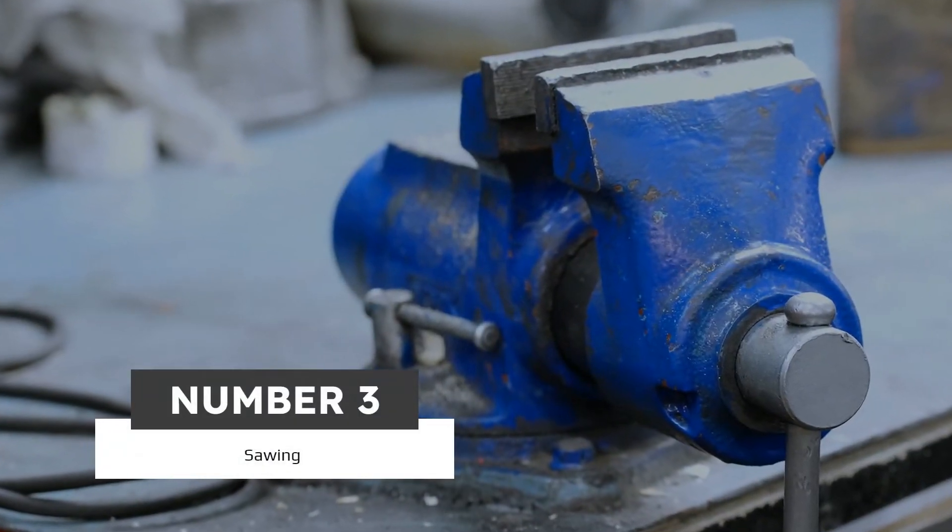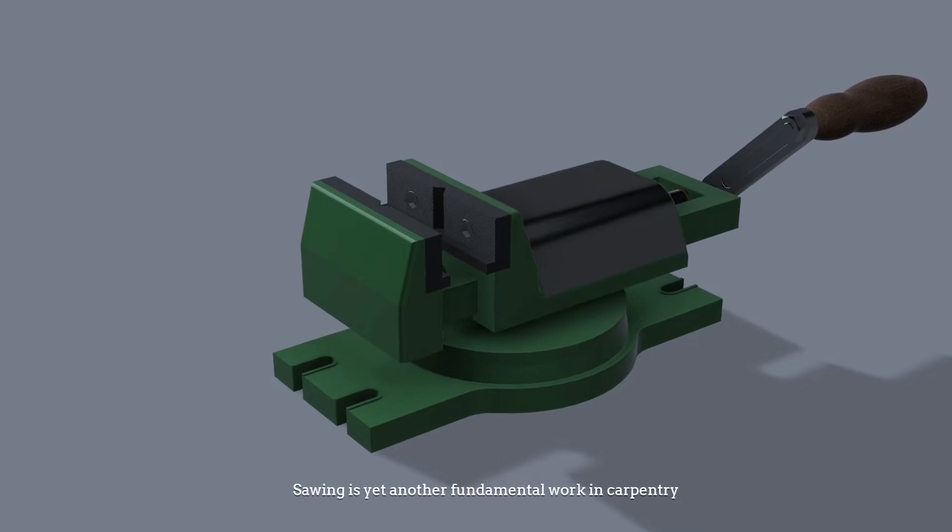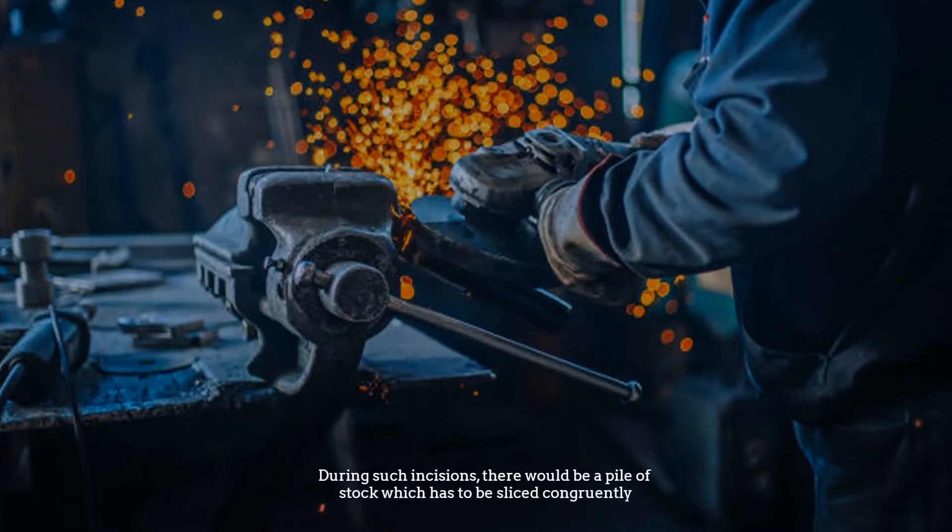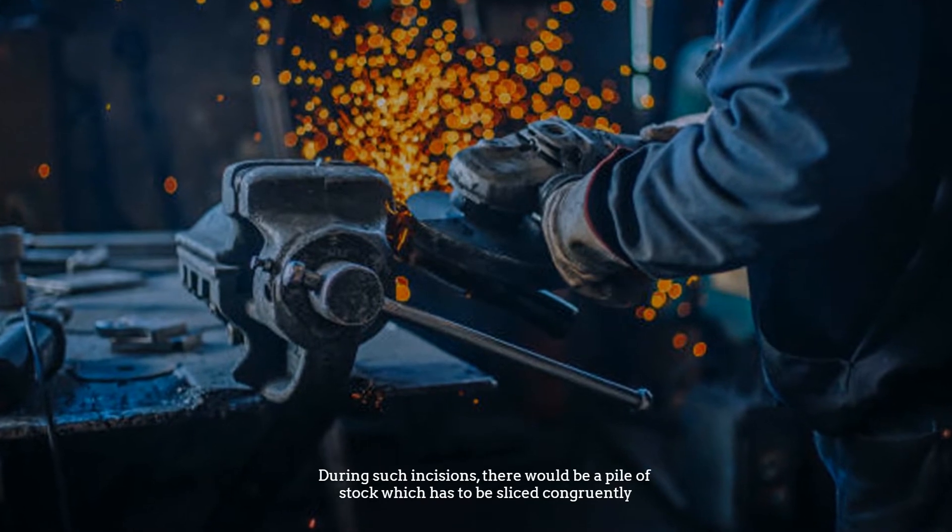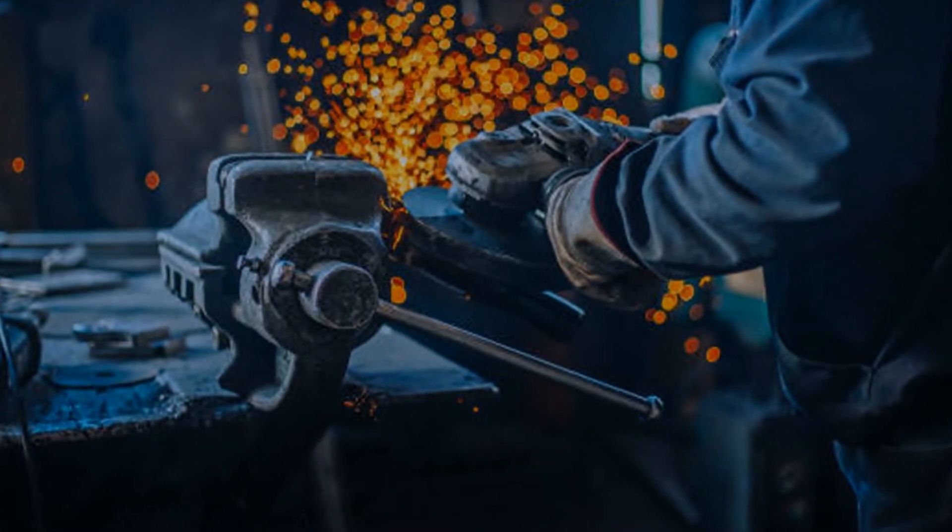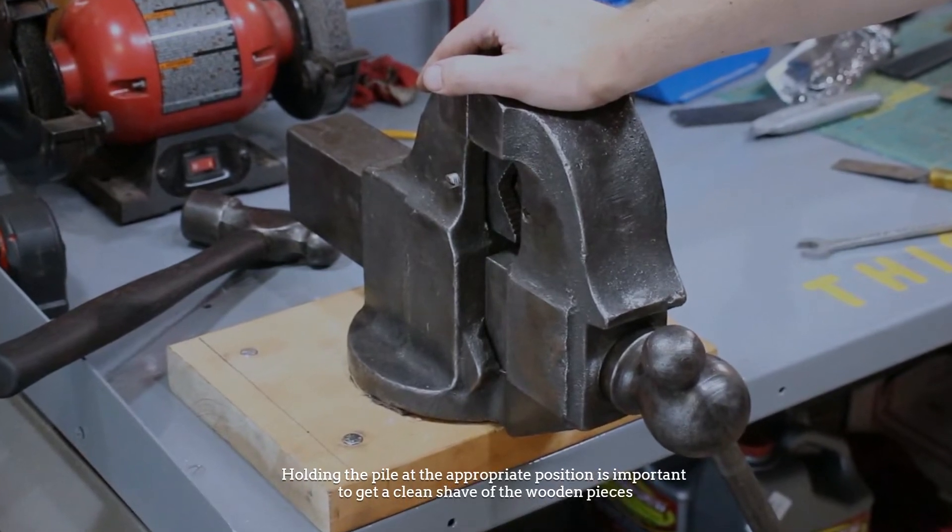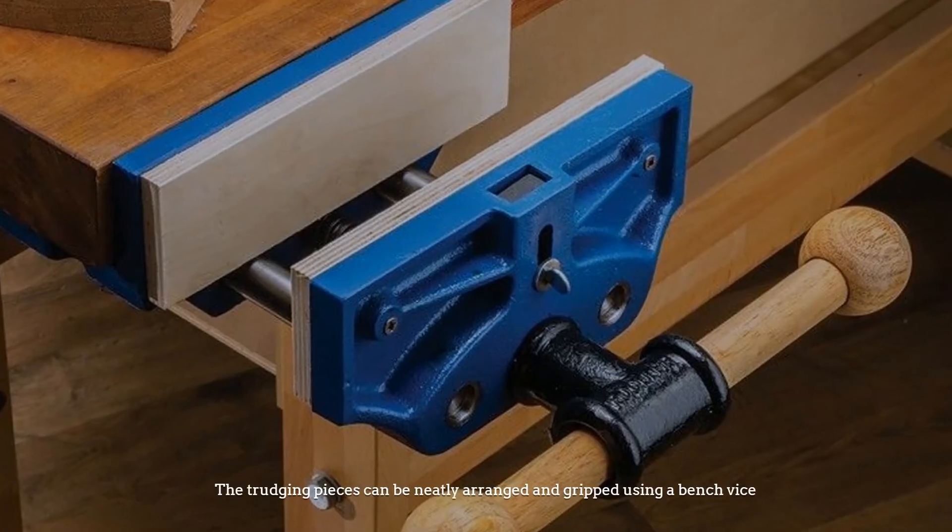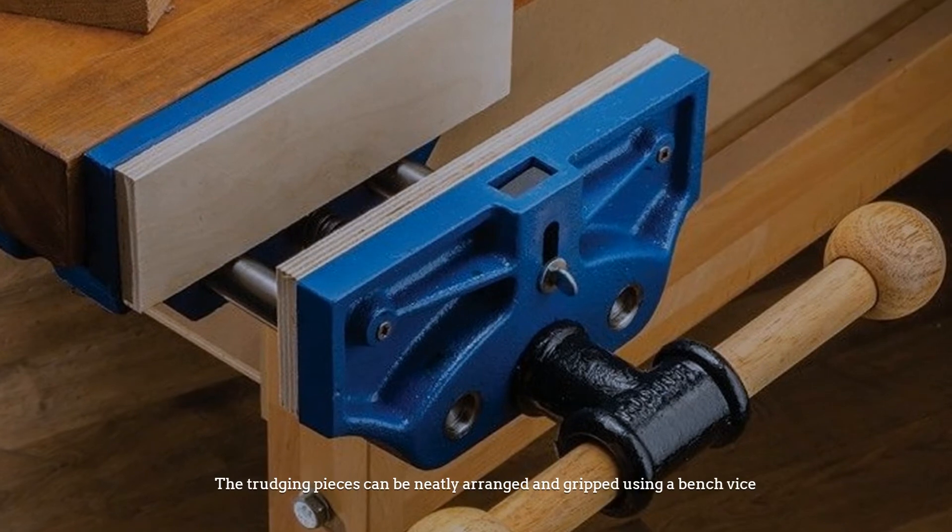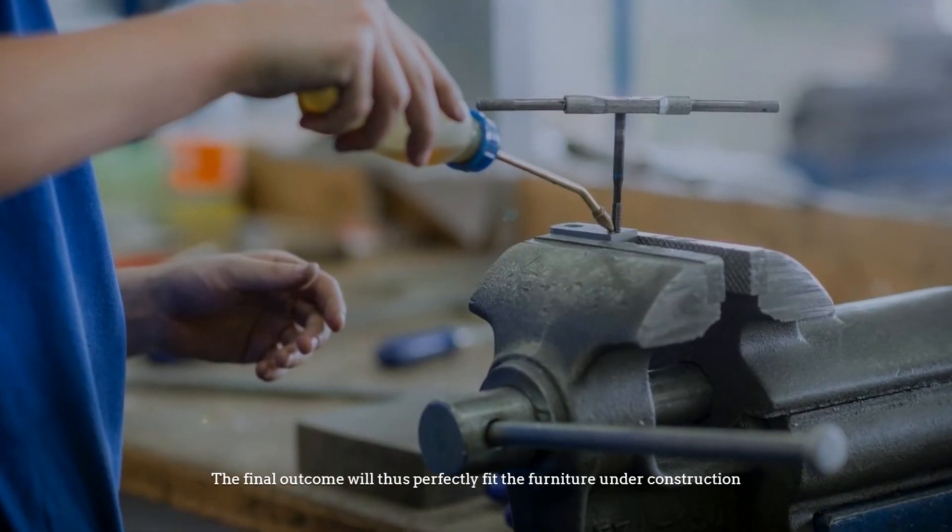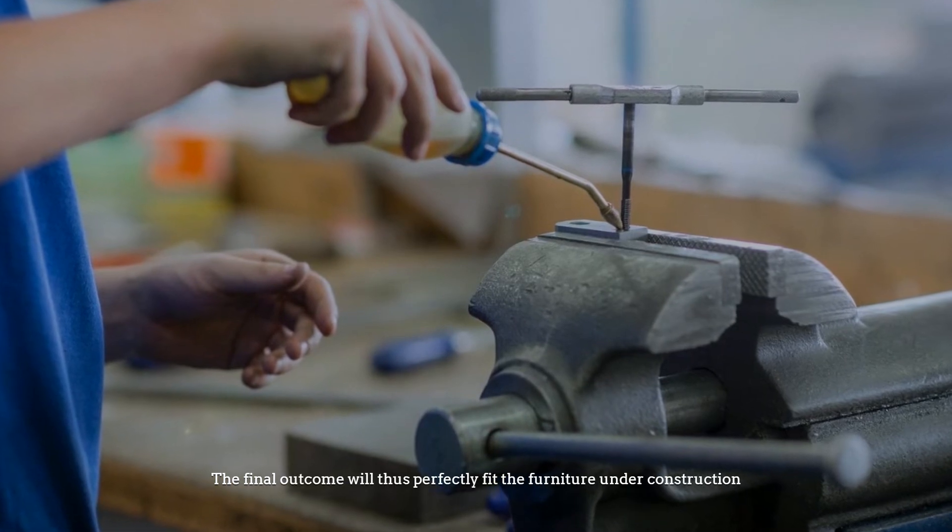Number 3. Sawing. Sawing is yet another fundamental work in carpentry. During such incisions, there would be a pile of stock which has to be sliced congruently. Holding the pile at the appropriate position is important to get a clean shave of the wooden pieces. The trudging pieces can be neatly arranged and gripped using a bench vise. The final outcome will thus perfectly fit the furniture under construction.